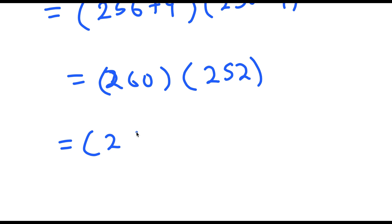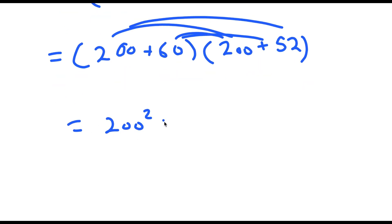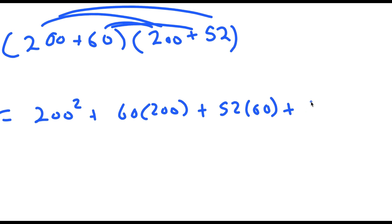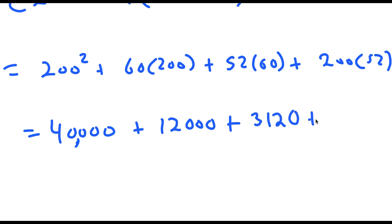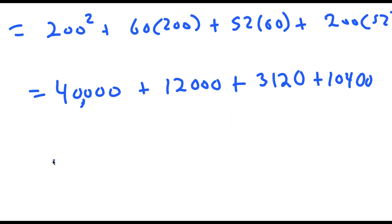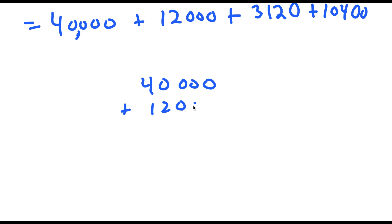Now 260 I can rewrite as 200 plus 60, and 252 I can rewrite as 200 plus 52. So now if I distribute, I get 200 squared plus 60 times 200 plus 52 times 60 plus 200 times 52. And this is equal to 40,000 plus 12,000 plus 3,120 plus 10,400.